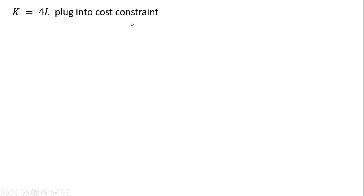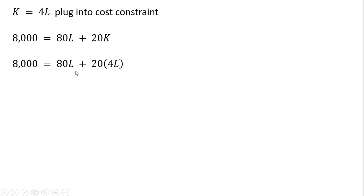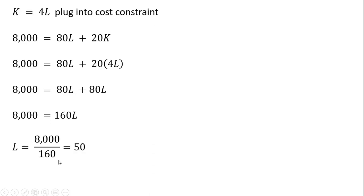We plug K = 4L into the cost constraint and simplify. We find we want to hire 50 workers. And since K equals 4 times L, and we're using 50 units of labor, we're going to use 4 times 50, or 200 units of capital.